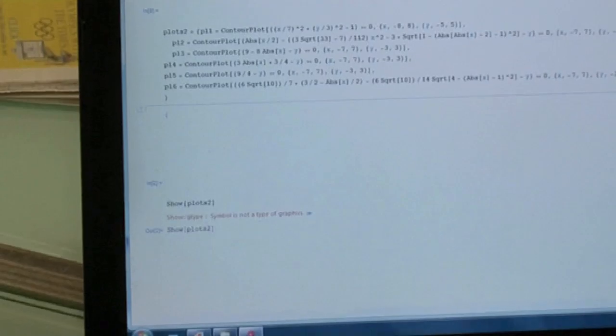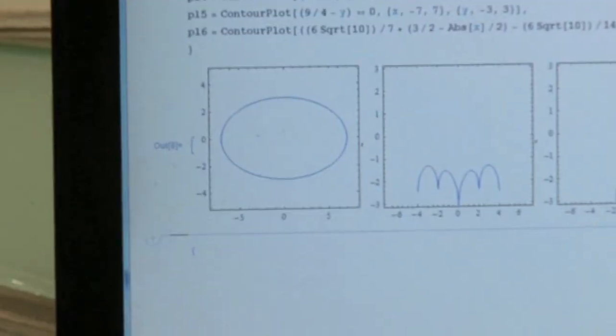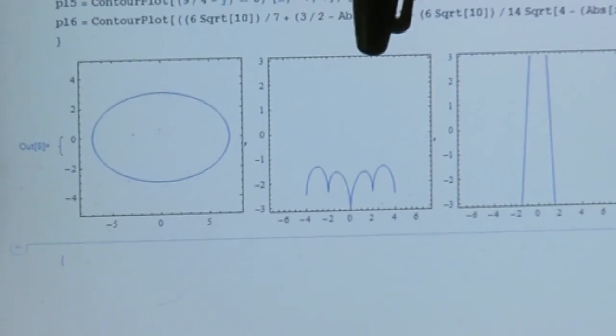Now, he used six curves. Let's have a look at them. He used the ellipse. And look, this is quite clever. This is the bottom of the Batman symbol.